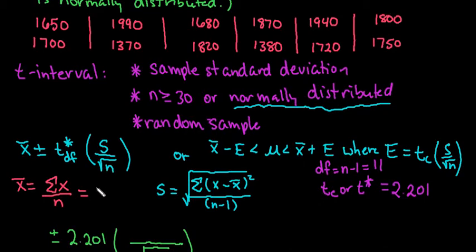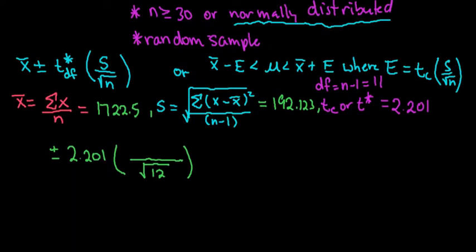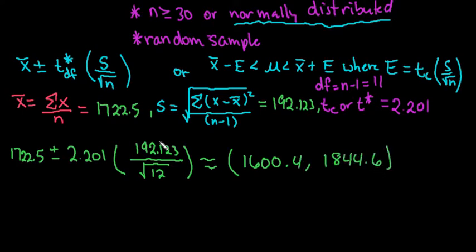I'm going to go ahead and write that information down. My mean was 1722.5. My standard deviation is 192.123. If I plug those values into here, I would have 1722.5 plus or minus 2.201, with a standard deviation of 192.123. The confidence interval that was generated was 1600.4 to 1844.6.